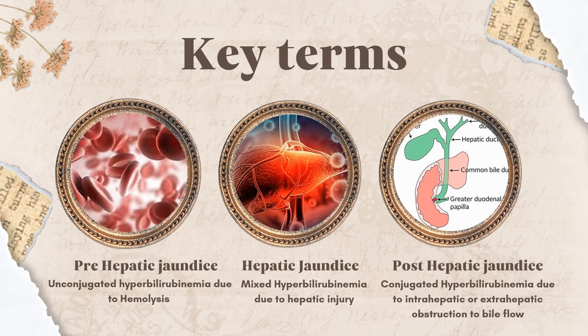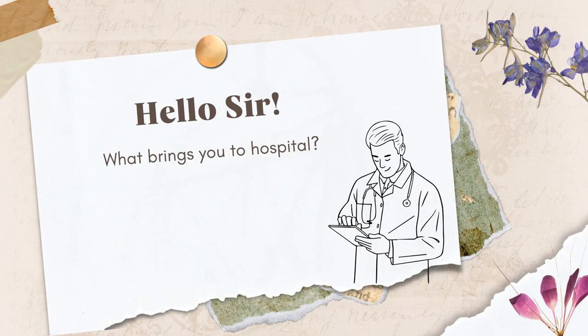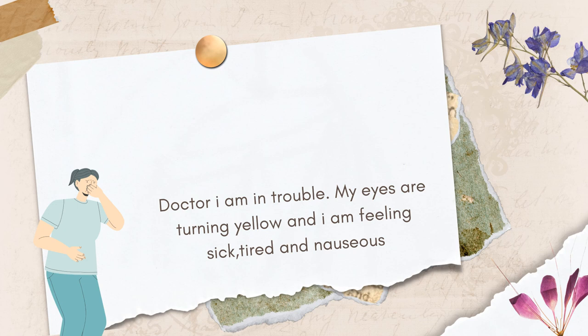When a patient comes to the emergency with yellow eyes and dark-colored urine, your first mental question should be: is this pre-hepatic, hepatic, or post-hepatic? In our clinical scenario, a patient came to the doctor in OPD or emergency and said: 'Doctor, my eyes are turning yellow and I am feeling sick, tired and nauseous.' This is a classic presentation of jaundice.